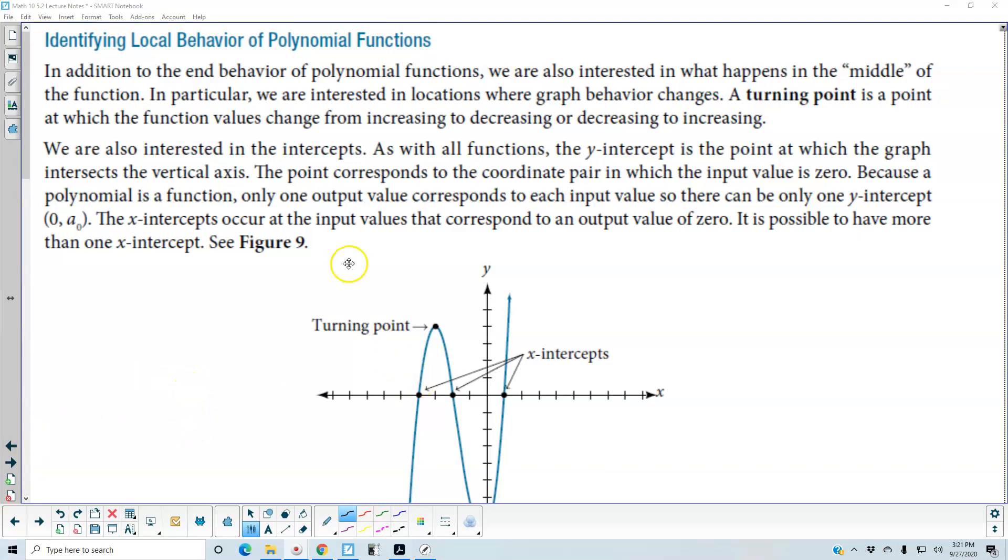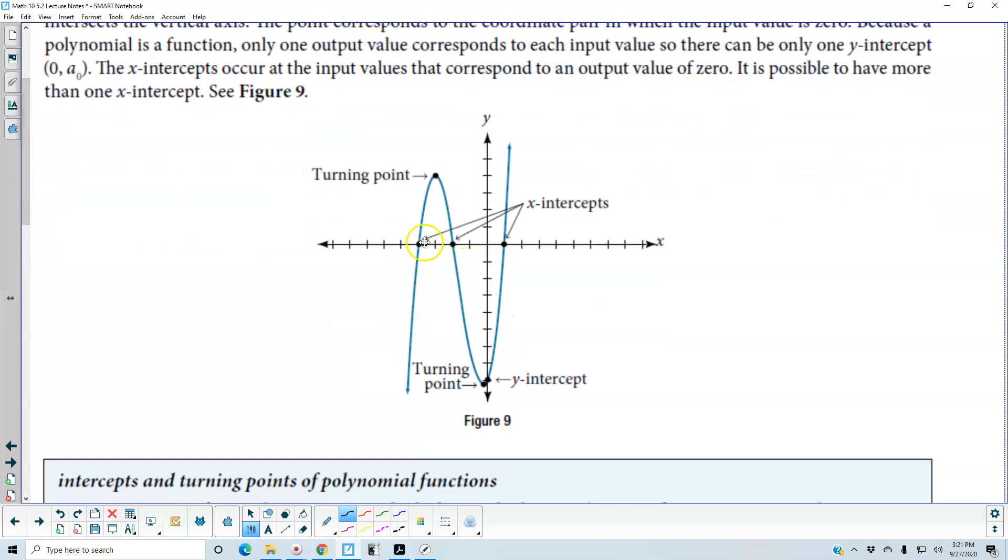The x-intercepts occur at the input values that correspond to an output value of zero. It is possible to have more than one x-intercept. Here you can see your x-intercepts.